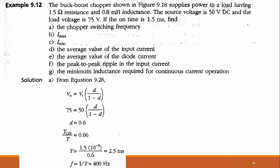The next example is on a buck-boost converter, which can both step up and step down DC voltages. The converter supplies a load with resistance 1.5 ohm and inductance 0.8 millihenry. Source voltage is 50 volts DC and load voltage is 75 volts, with T_on = 1.5 millisecond. The buck-boost output equation is V_out = V_in times D divided by (1 − D). Solving gives D = 0.6.